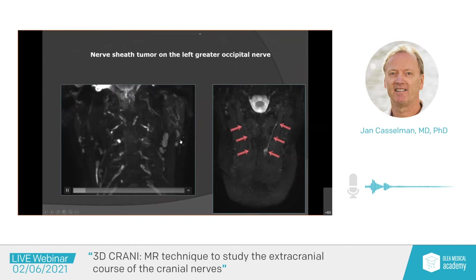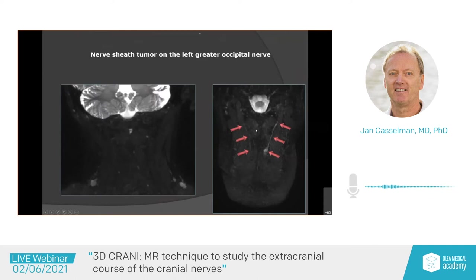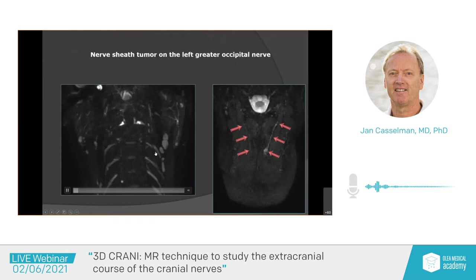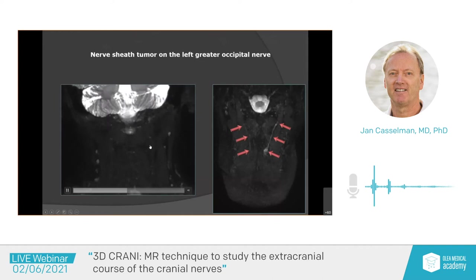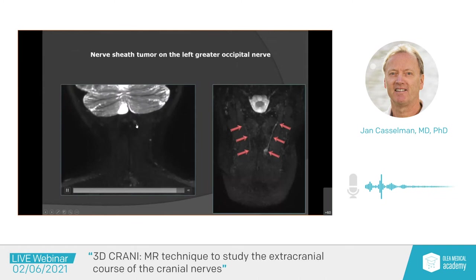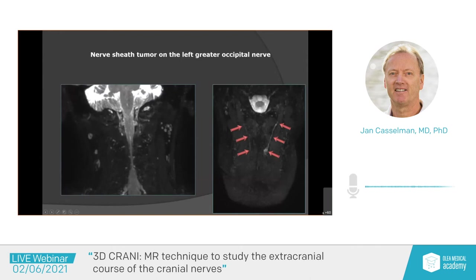Another example: this patient came in with pain on the left side. We see the greater occipital nerve on the left side with a thickening — a nerve sheath tumor. You can follow these nerves in the coronal plane, and on the movie you can follow the greater occipital nerve, and there — bingo — you have the lesion on the nerve. This is how we follow these nerves today in between the muscles, because we suppress everything surrounding it.